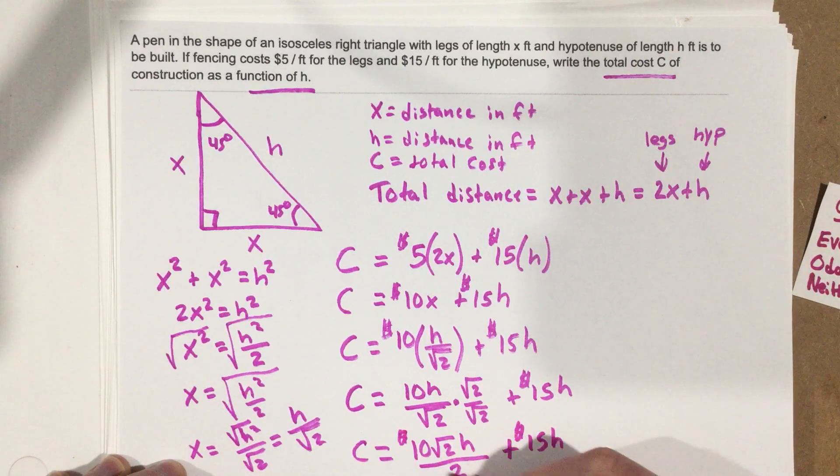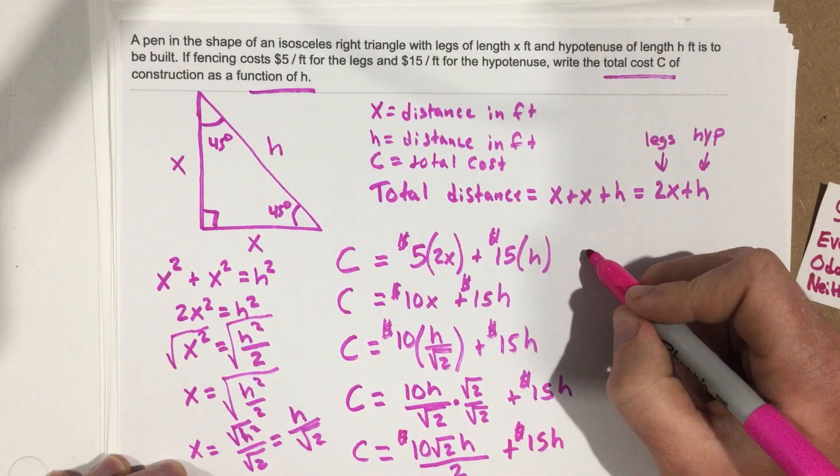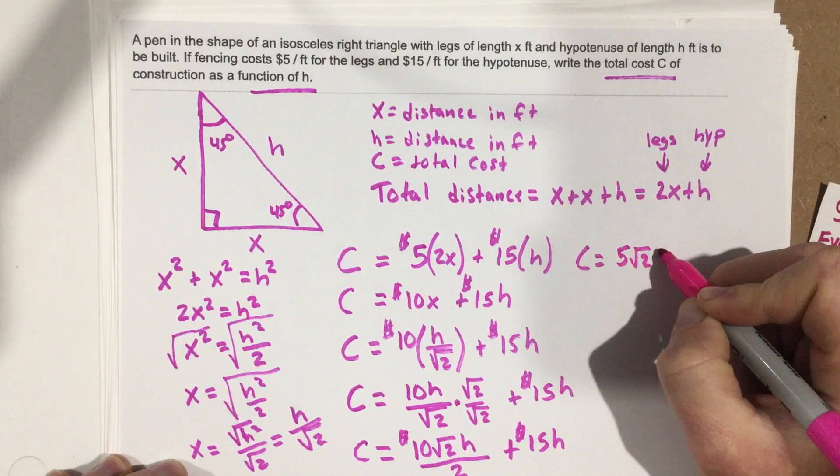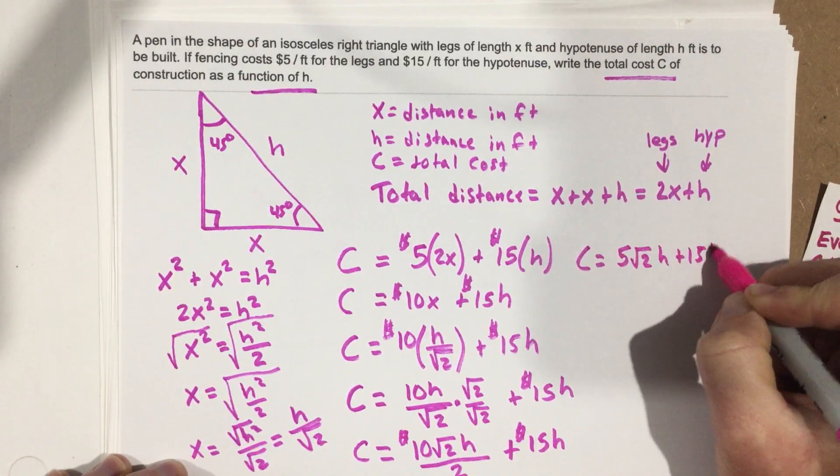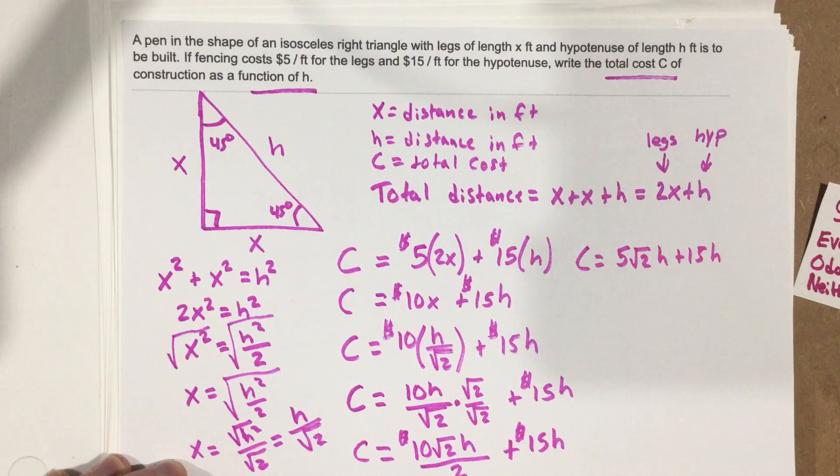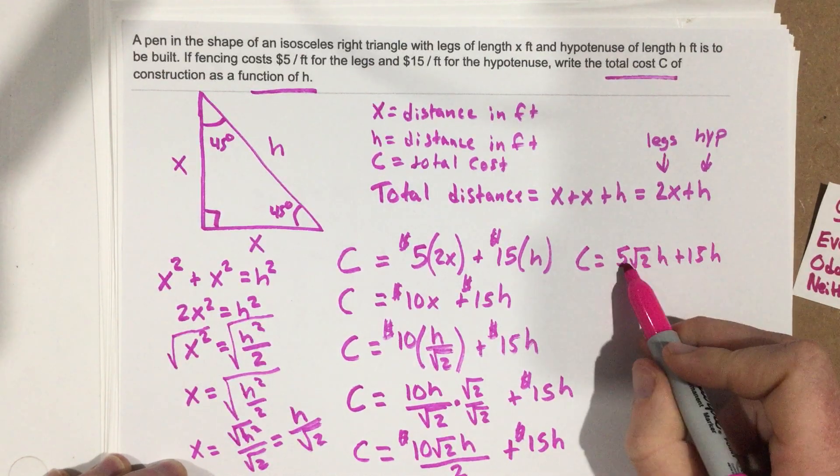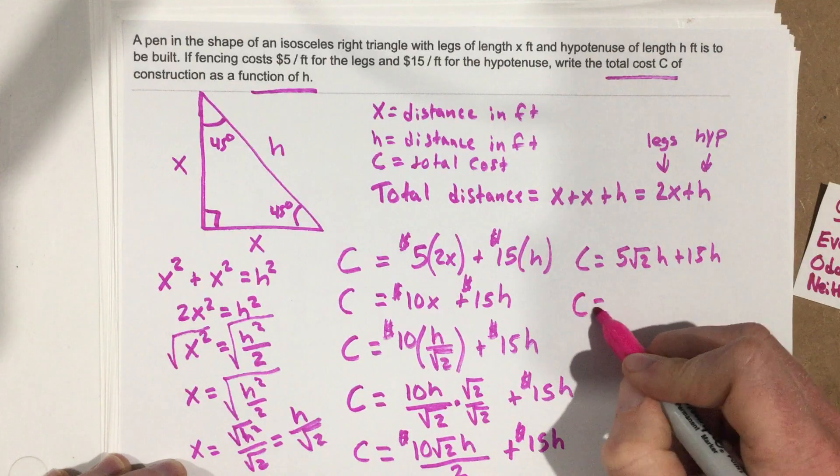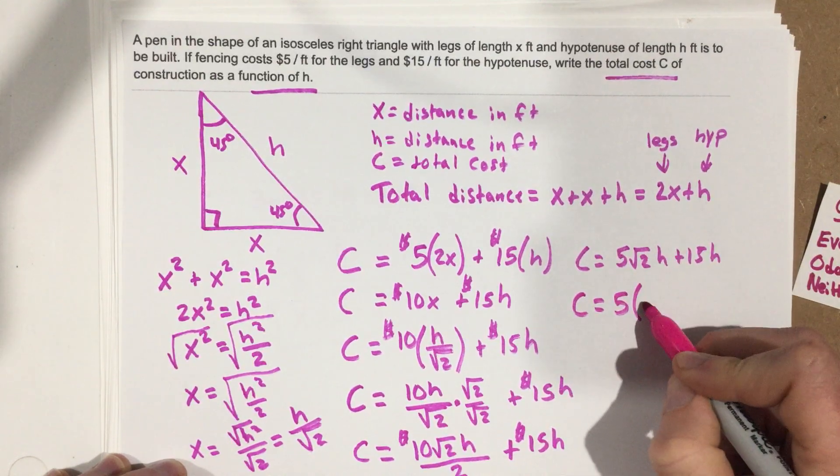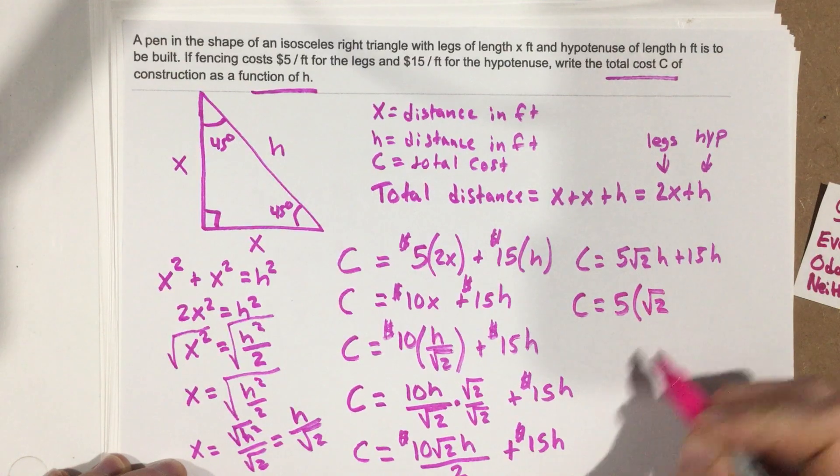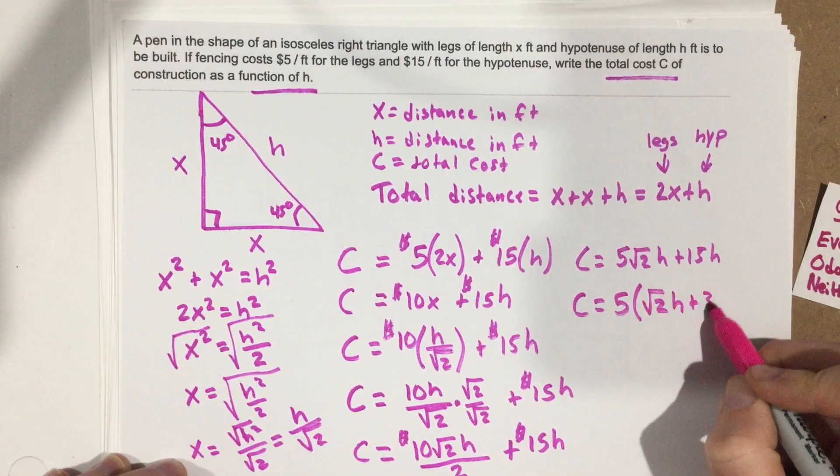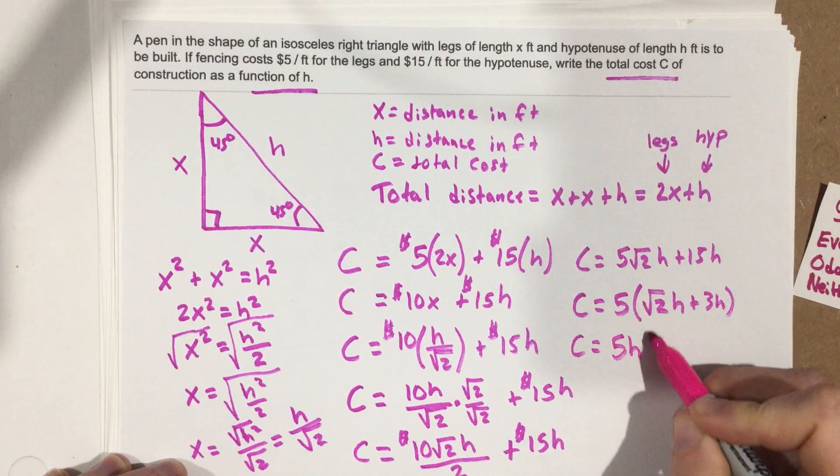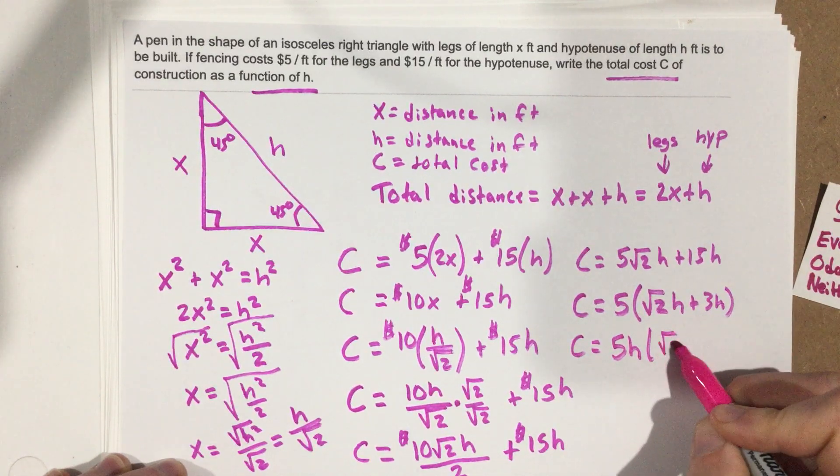And then I can actually cancel the 10 and the 2, and I end up with 5 root 2 H plus 15H. And then technically, because I have a 5 in each of these, I could factor out a 5 if I wanted to. You could write it as 5 times root 2 H plus 3H. And then you could actually factor out an H as well, and you could write this as 5H times root 2 plus 3.